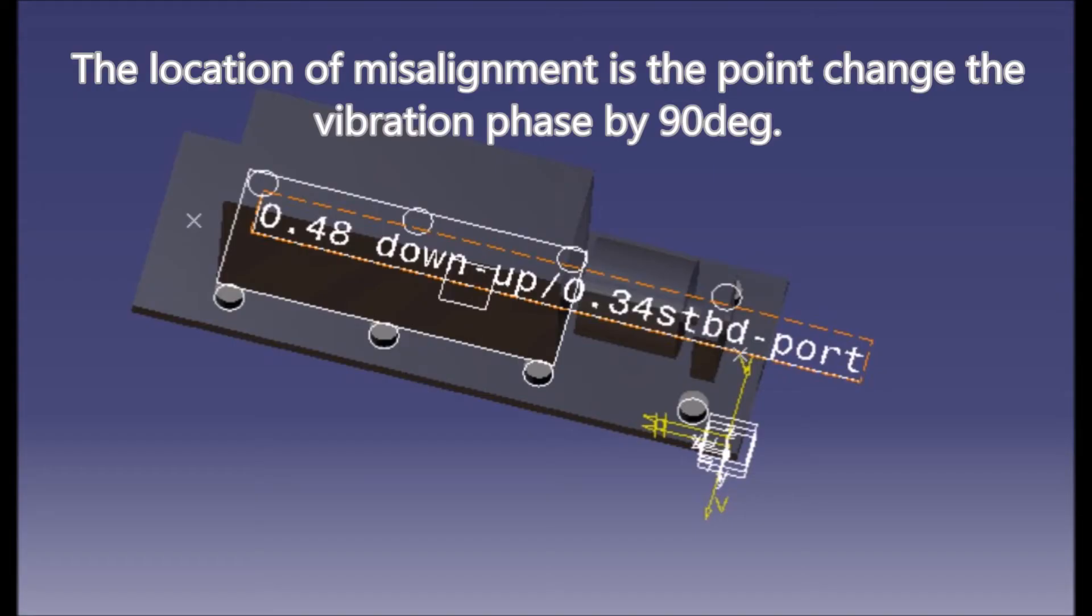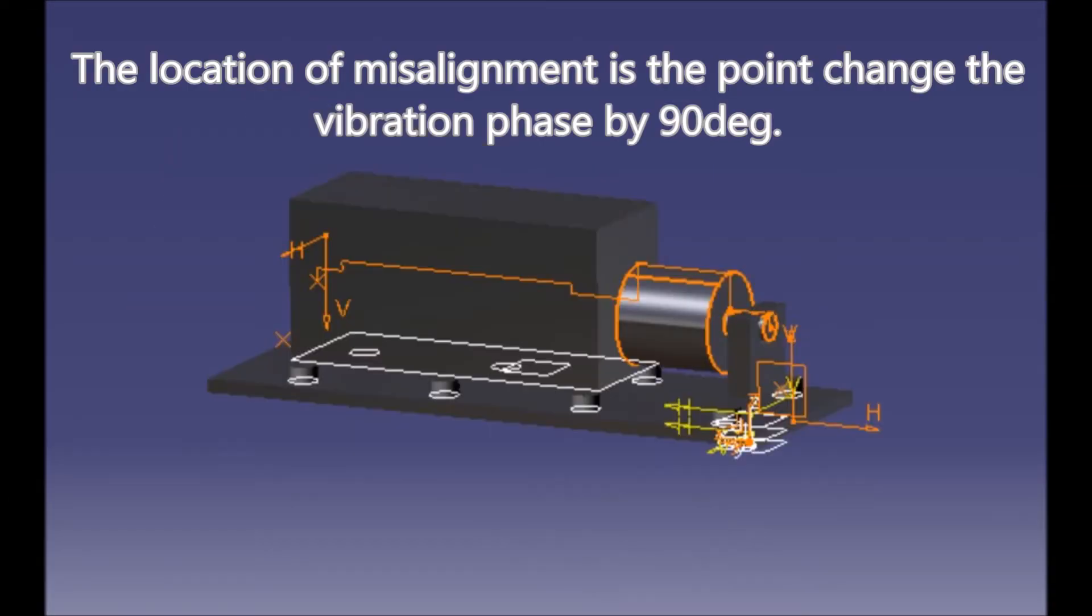The location of misalignment is the point where the vibration phase changes by 90 degrees.